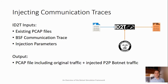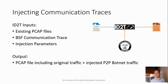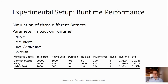In greater detail: ID2T takes two inputs — one is an existing PCAP file, the second is a communication trace exported from the Botnet Simulation Framework — along with a set of injection parameters that tell ID2T how to combine these two input sources. The output of ID2T is then a PCAP file including all the original traffic overlaid with the injected peer-to-peer botnet traffic on top, or just a plain PCAP file containing only the injected peer-to-peer botnet traffic.